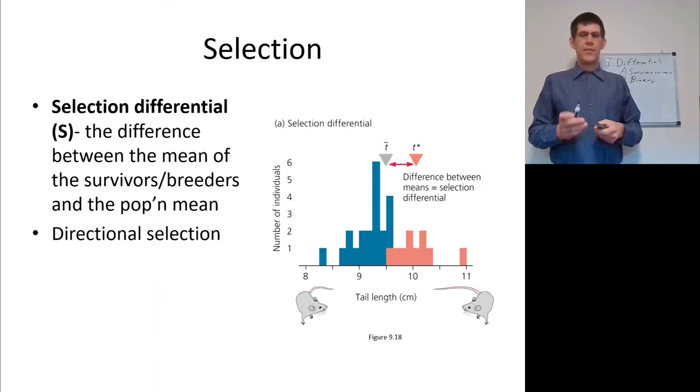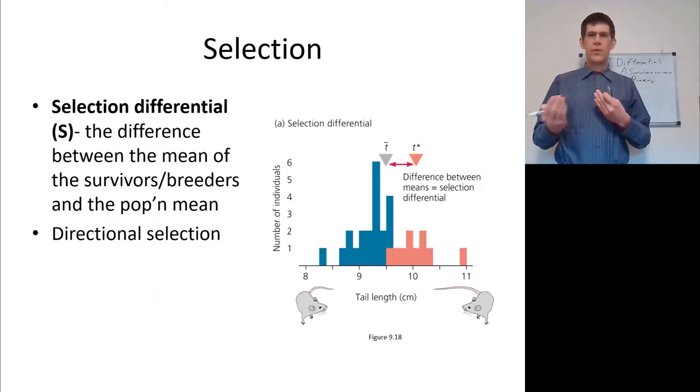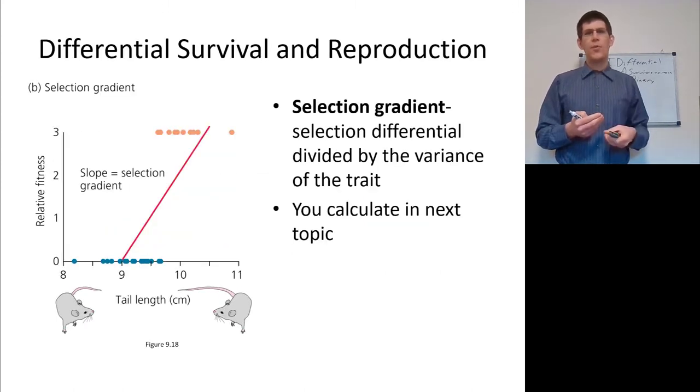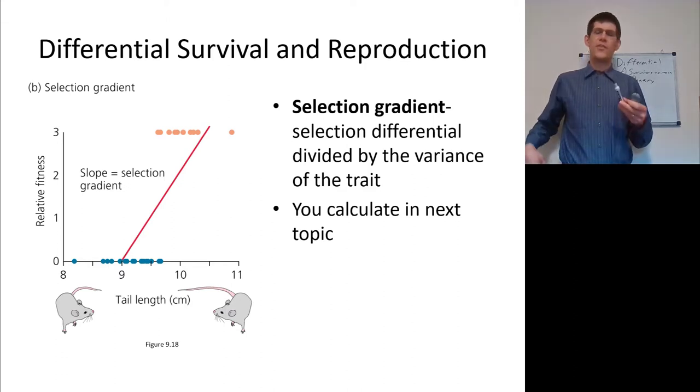Within the selection differential, it's not allowing for a lot of real difference. As you see here, when we actually looked at it by a gradient, we'd be looking at surviving with either three offspring or zero offspring. So that's where this differential becomes binary.